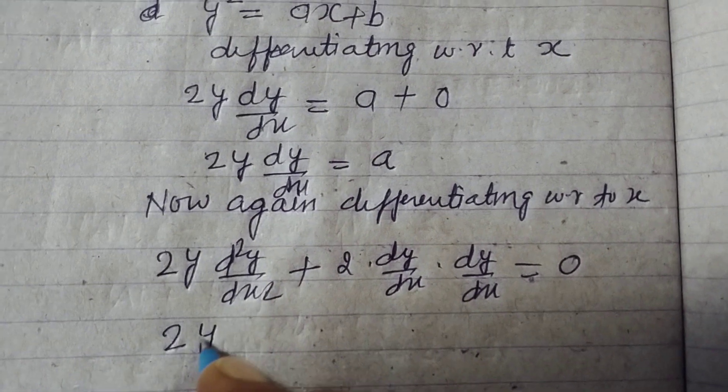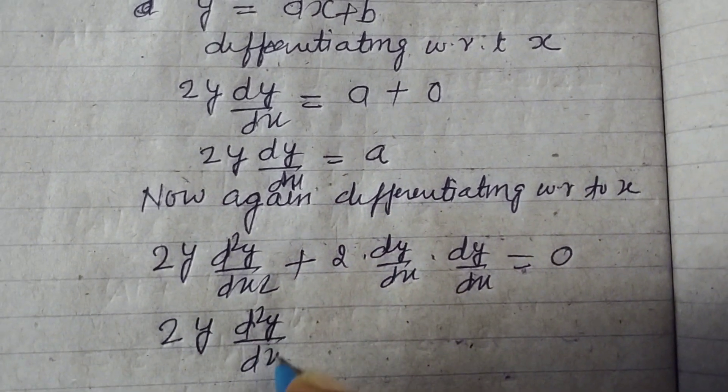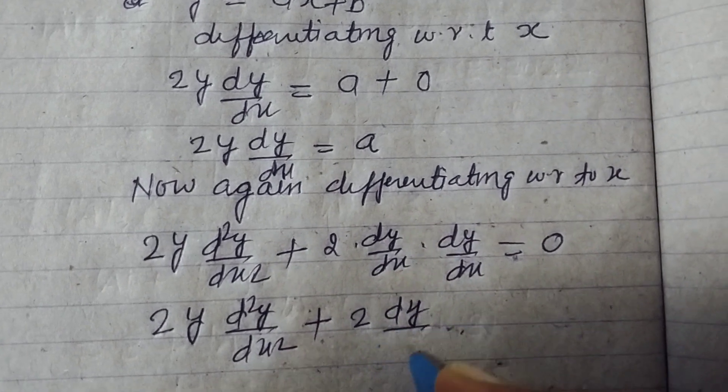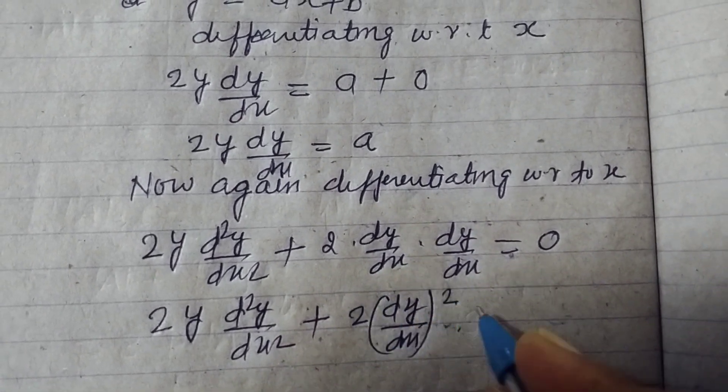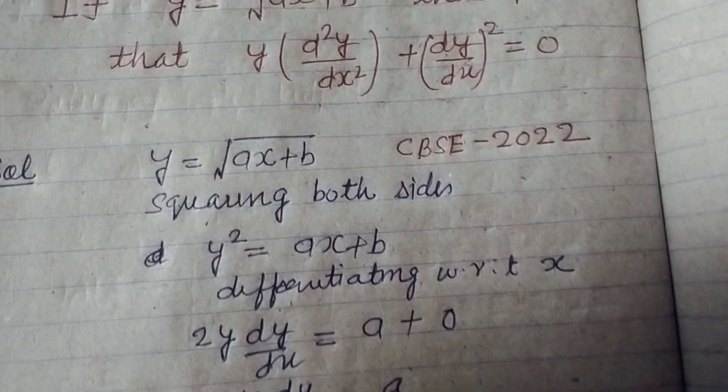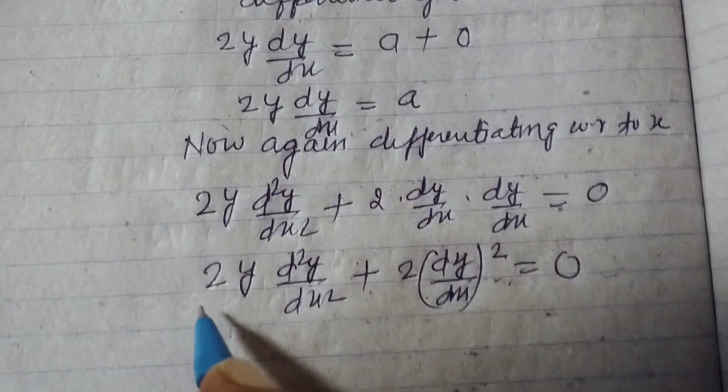So 2y d square y over dx square plus 2 dy over dx whole square equals zero. Now we want to find out, we divide this by 2.